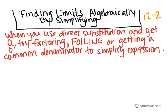This is section 12-2, where you're finding limits algebraically, and that means not using a calculator. So when you try to evaluate it and you plug in the number the limit is approaching and you get 0 over 0, you're going to try one of these three methods: either factoring, foiling, or getting a common denominator.